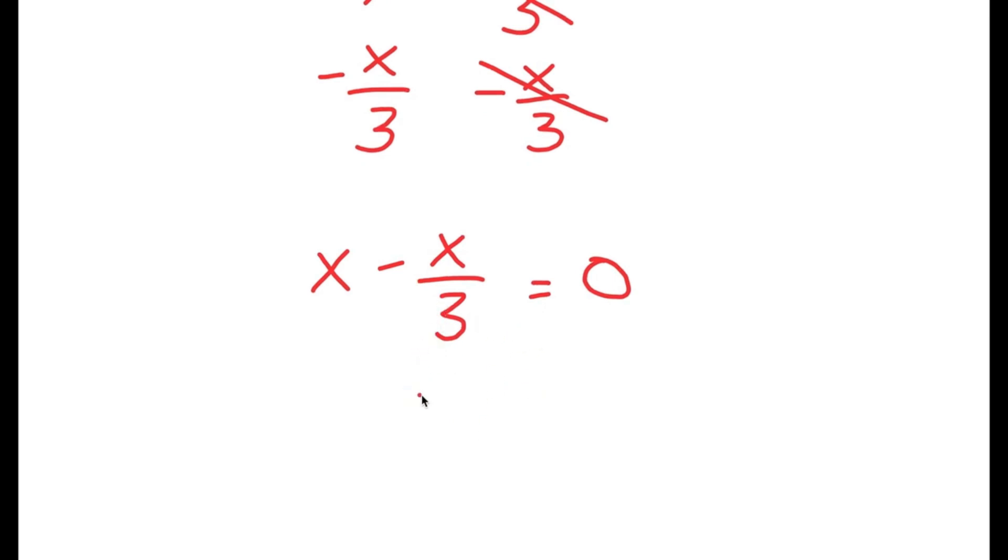So now from here, what I'm going to do is multiply both sides by 3, because we want to get rid of this division of 3. So the only way to do that is to multiply both sides by 3. So now I have 3 times x minus x over 3 is equal to 0 times 3.